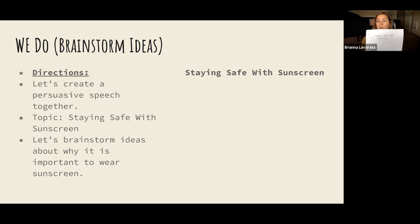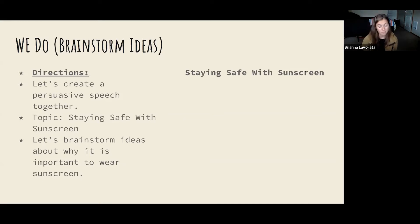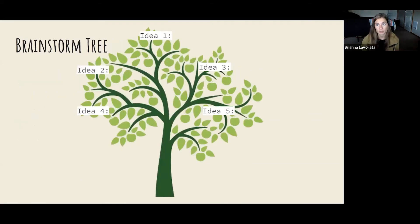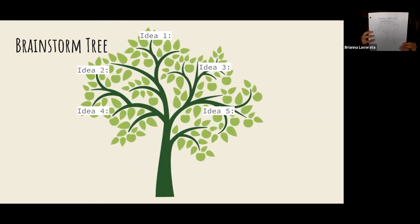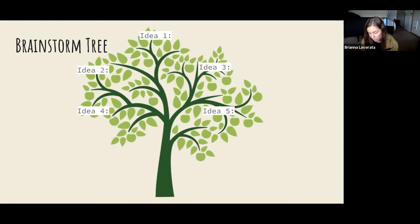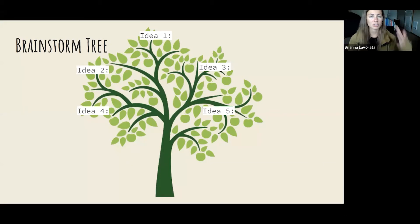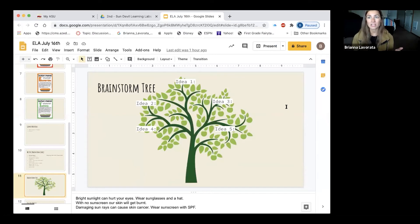Before we write anything, we want to always brainstorm our ideas. I can think of a million different topics that have to do with why we should wear sunscreen, and I'm sure you can too. But to stay organized, I would like for us to create a brainstorming tree. We're going to think of five different ideas together. On your paper, go ahead and draw a tree — it does not have to be perfect. In the tree, we're going to write five different ideas about why it's so important to wear sunscreen.